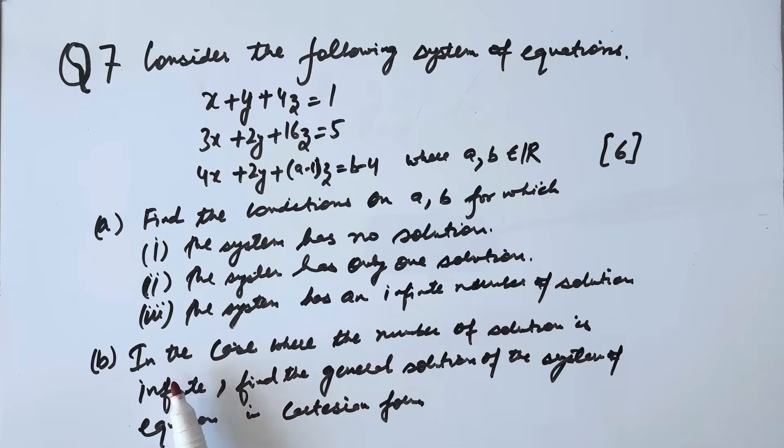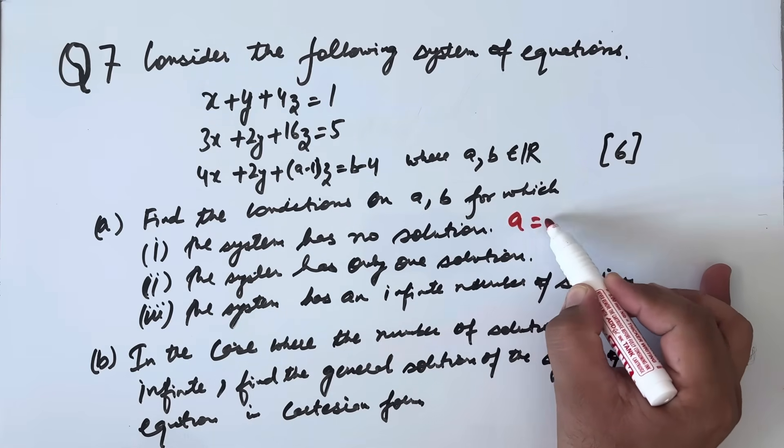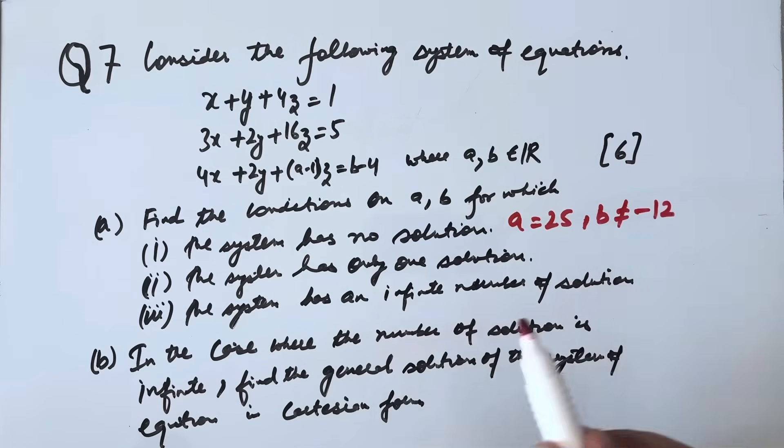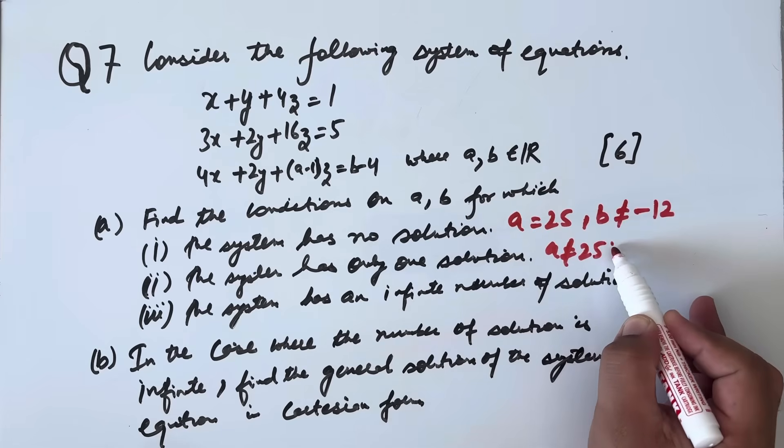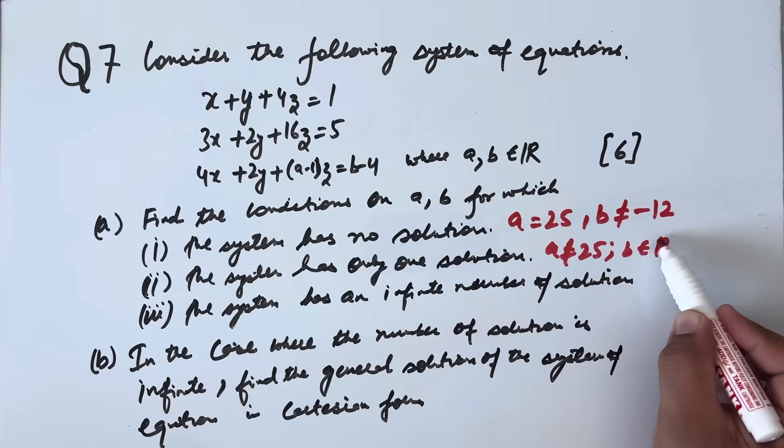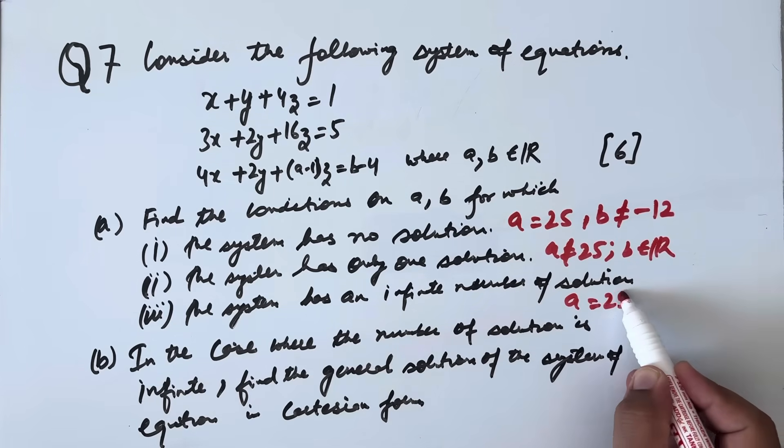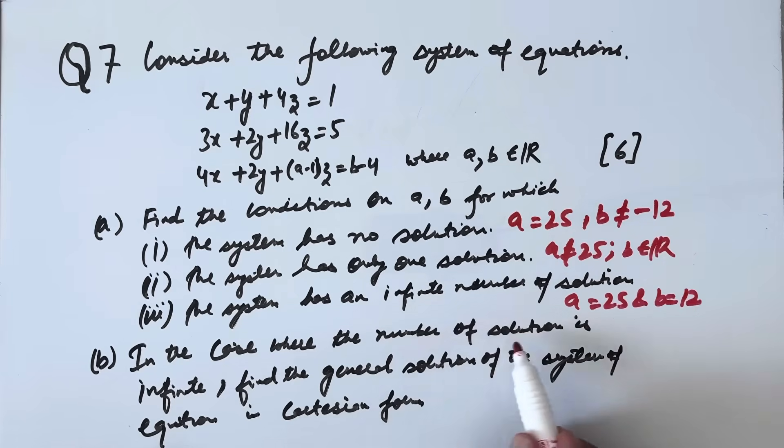Part b, in the case where the number of solutions is infinite, find the general solution of the system of equation in Cartesian form. So answer will be: for no solution a equals 25 and b not equals -12. For only one solution a not equals 25 and b can be any real number. For infinitely many solutions a equals 25 and b equals -12.